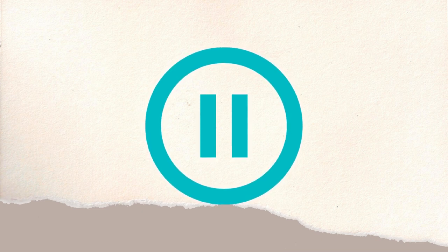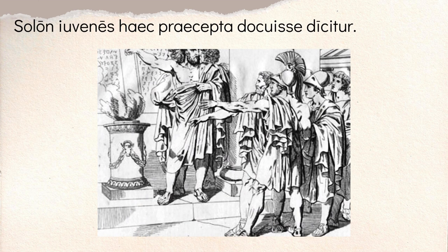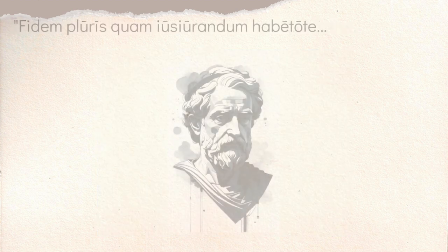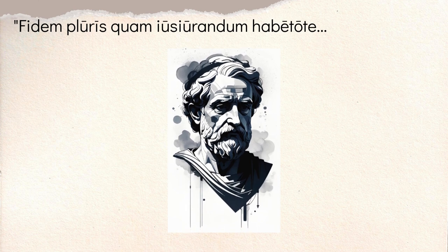Now let's unpack it line by line. Solon is said — dicitur — to have taught young men, juvenes, these lessons. Precepta is where you get the word 'precepts,' as Bennett called it in the title, but they're sort of moral lessons he is said to have taught young boys. One thing that might look a little weird to you is habitote — that's a future imperative of habere. It's indicating things you need to do in the future. It's an imperative, and he's saying hold faith, value honesty, more than an oath — pluris quam ius iurandum.